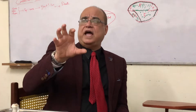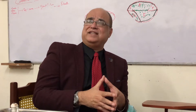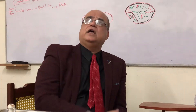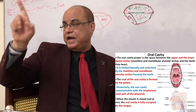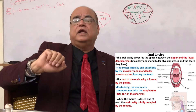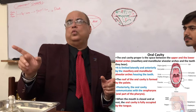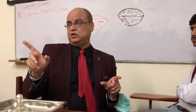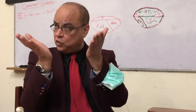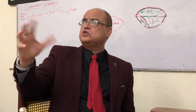Oral cavity proper is that part behind the upper and lower jaw along with their teeth. Anteriorly and on the sides will be the teeth and jaw. The roof is formed by the hard palate only — soft palate is not included in oral cavity; soft palate is included in oropharynx. Floor of the mouth is formed by the mylohyoid muscle — that is a common misconception. Tongue is the content of the oral cavity. Posteriorly, the oral cavity is continuous with the oropharynx through what we call the oropharyngeal isthmus.